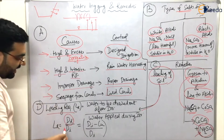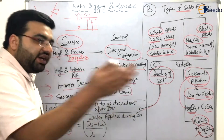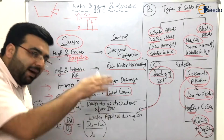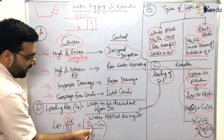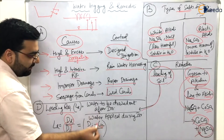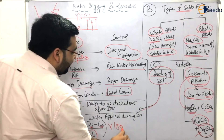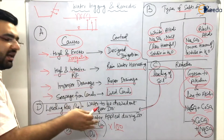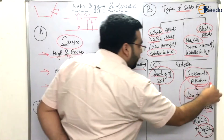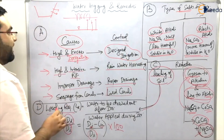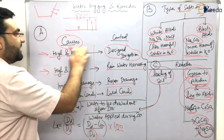Let Dd be the drained out water and Di be the inlet water. Then Dd equals the water applied minus the consumptive use by plants. The leaching requirement equals (water applied minus consumptive use) divided by water applied, multiplied by 100 to get a percentage. Direct questions on the leaching requirement formula as well as theoretical questions on water logging and its remedies have been asked very frequently in examinations.